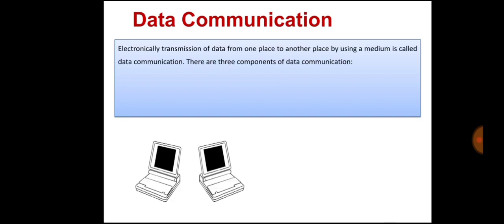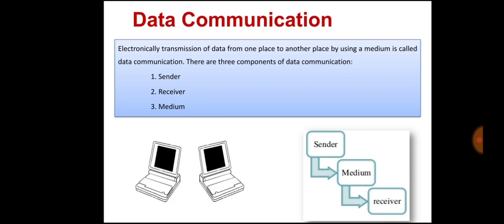There are three main components of data communication: sender, receiver, and the medium. A sender is a device or computer that generates and sends the message. A receiver is a device or computer that receives the message. The location of the receiver computer is generally different from the sender computer. The distance between the sender and receiver depends upon the types of network used in between.